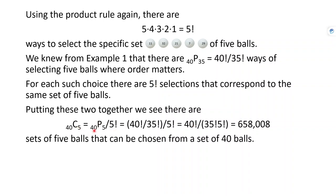So the number of combinations is C(40,5) = P(40,5) / 5! = [40! / 35!] / 5! = 40! / (35! × 5!). The general formula for choosing M things from N things without replacement, ignoring order, is N! / [(N−M)! × M!]. In Excel this is written as COMBIN(N, M).